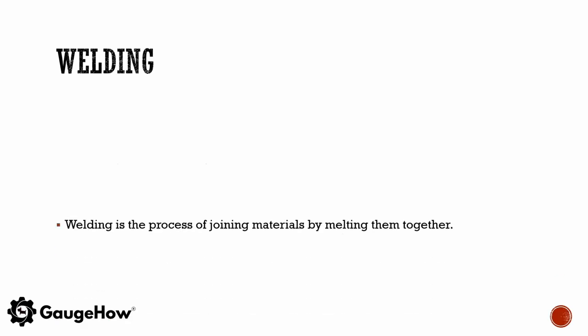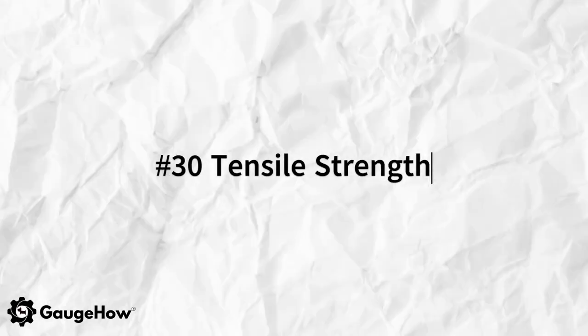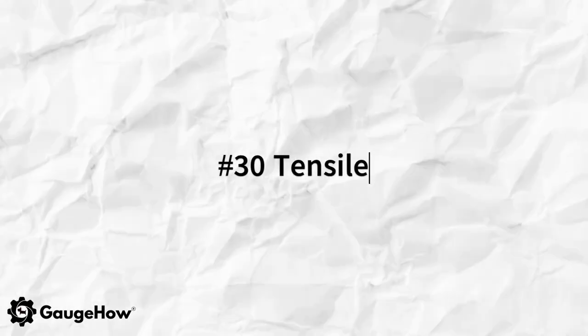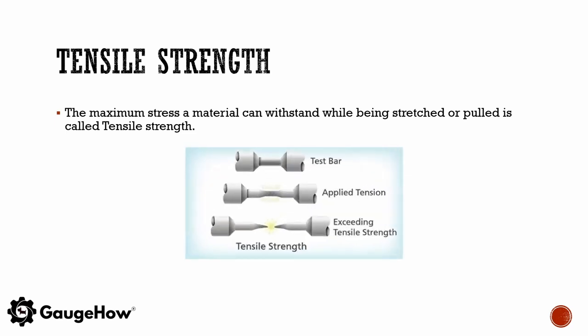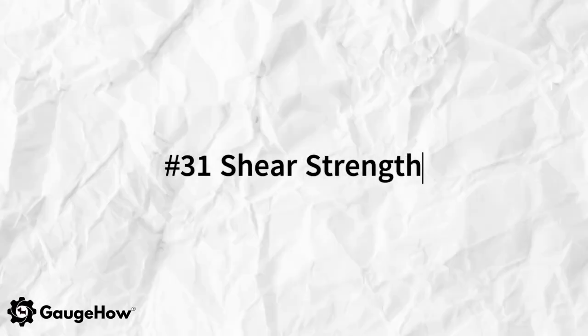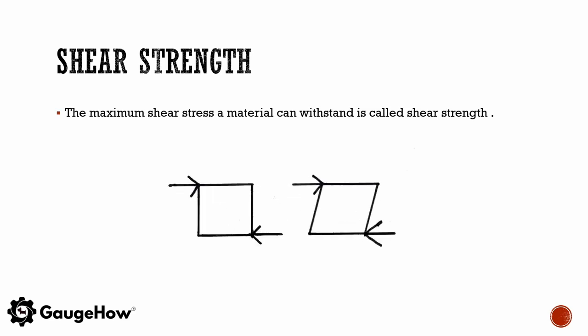Welding is the process of joining materials by melting them together. The maximum stress a material can withstand while being stretched or pulled is called tensile strength. The maximum shear stress a material can withstand is called shear strength.